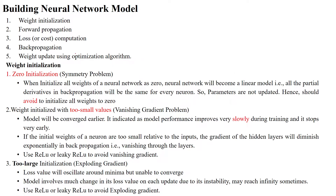The neural network is built using five steps: weight initialization, forward propagation, loss or error computation, back propagation, and updating the weights to optimize our model.